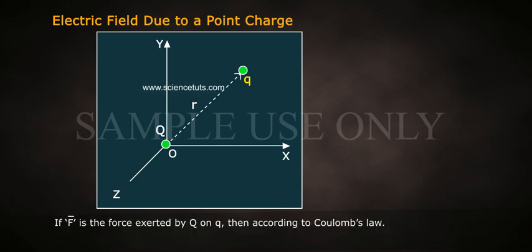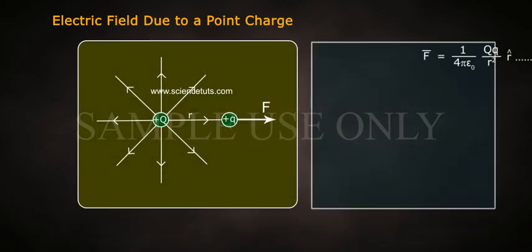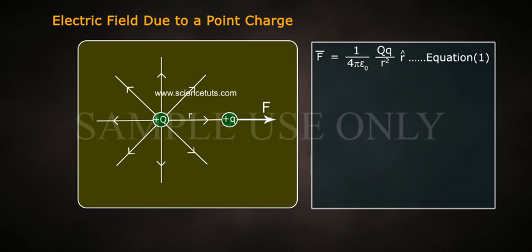If F bar is the force exerted by Q on q, then according to Coulomb's law, F bar is equal to 1 by 4 pi epsilon 0 Q q by r square r cap. The magnitude of electric field due to a point charge is E is equal to 1 by 4 pi epsilon 0 Q by r square.